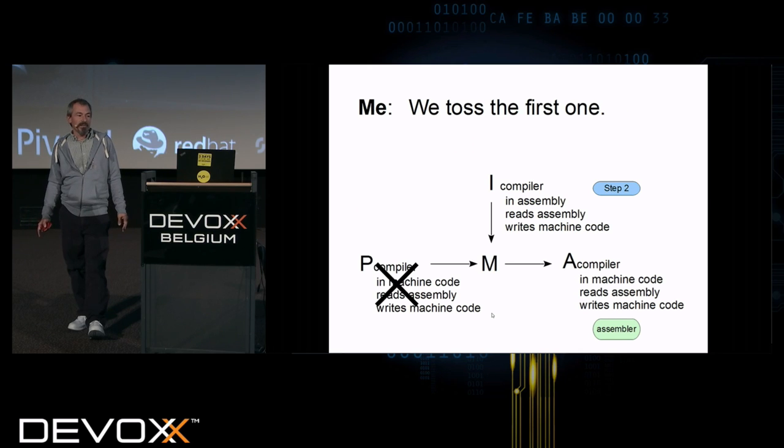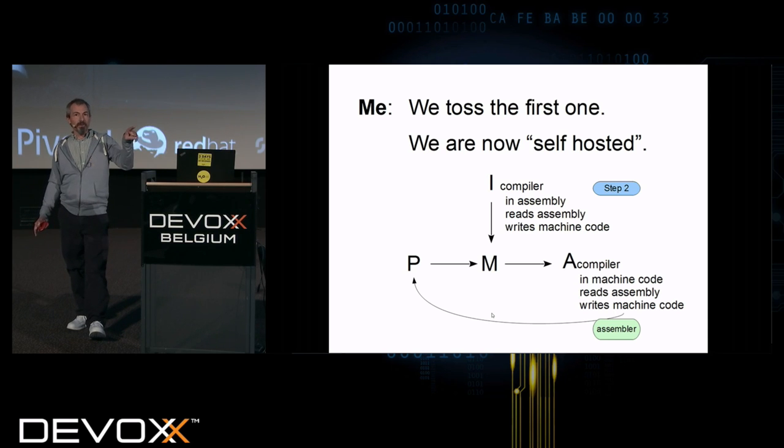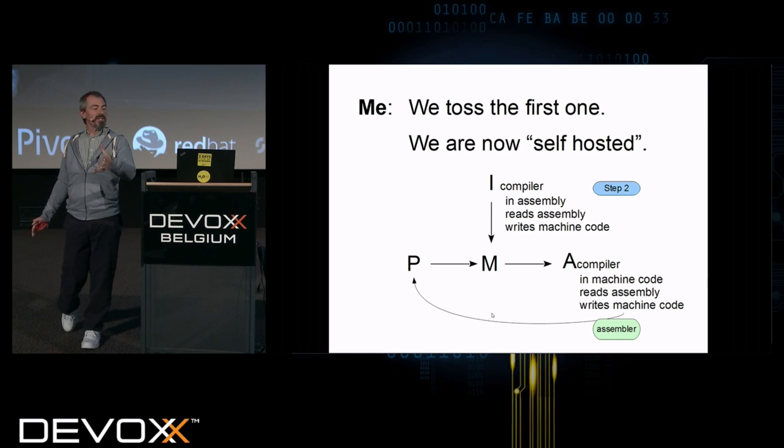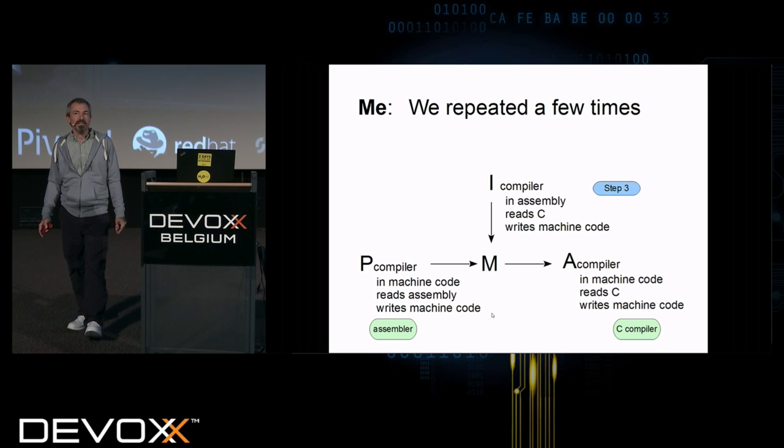Well, we have the easier to write one in assembly. And then what do you need the old one for? Turns out you don't. You can toss it. And then you can use the second one, the compiler in machine code, as your input program as well. So you now have a compiler in assembly which reads assembly and writes machine code, and a compiler in machine code which reads assembly and writes machine code. One makes the other, and there's a closed cycle there. And we call this being self-hosted.